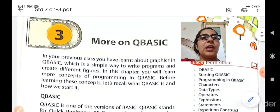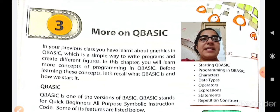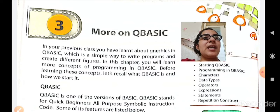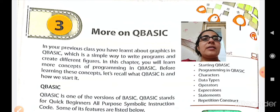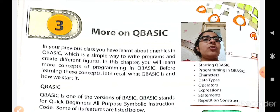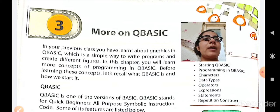So first of all, what is QBASIC? QBASIC is one of the versions of BASIC. We have already studied about BASIC languages — that is BASIC and COBOL. QBASIC is an advanced version of BASIC. It is a simple way to write programs and create different figures. With QBASIC you are able to write simple or short programs and create different figures — whichever figure you want to create, it is possible using this QBASIC programming language.